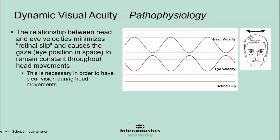If we look at the head and eye velocities, they are essentially equal but in opposite directions. As a result, the retinal slip will be minimized, which is necessary to have a clear vision during head movements.